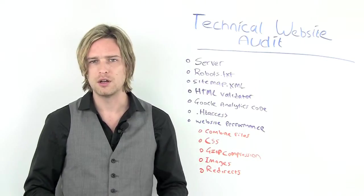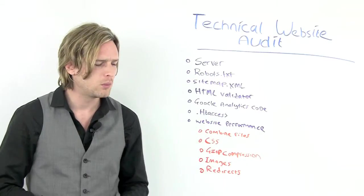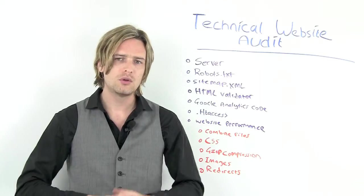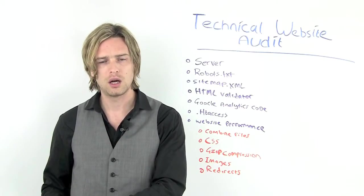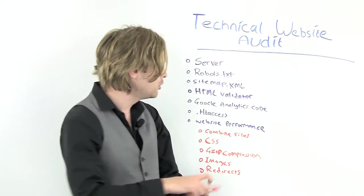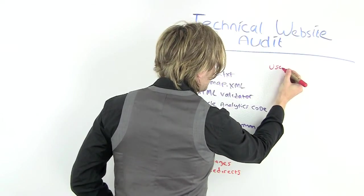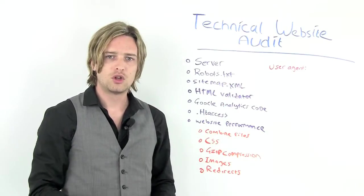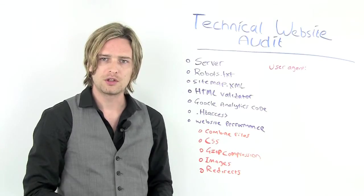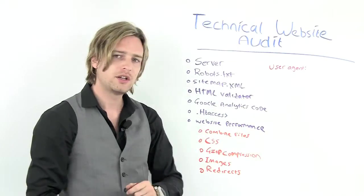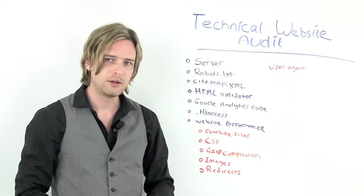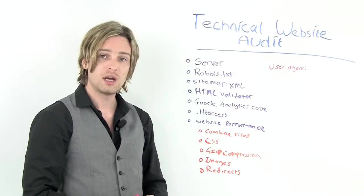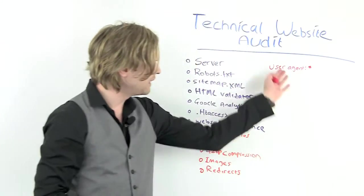It's very important to have this in place because it's the first port of call for robots that are going to index your site. This can be more important for one person than another, depending on the type of site you've got. You can also specify a different set of commands for one website crawler over another website crawler. The opening statement in a robots.txt file should be user agent followed by a colon. This specifies the Google bot or Bing bot or whatever it is that you want to give commands to.